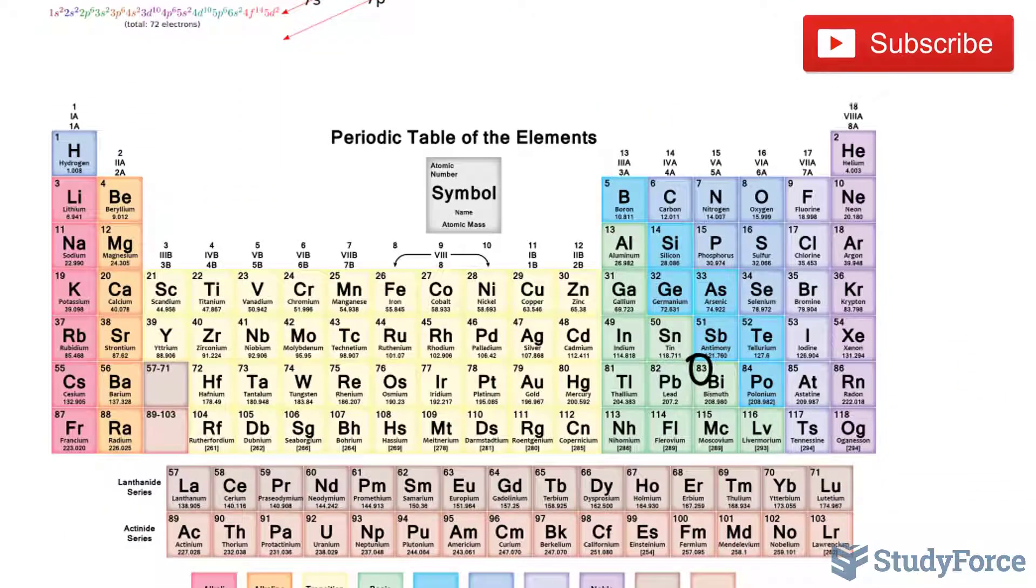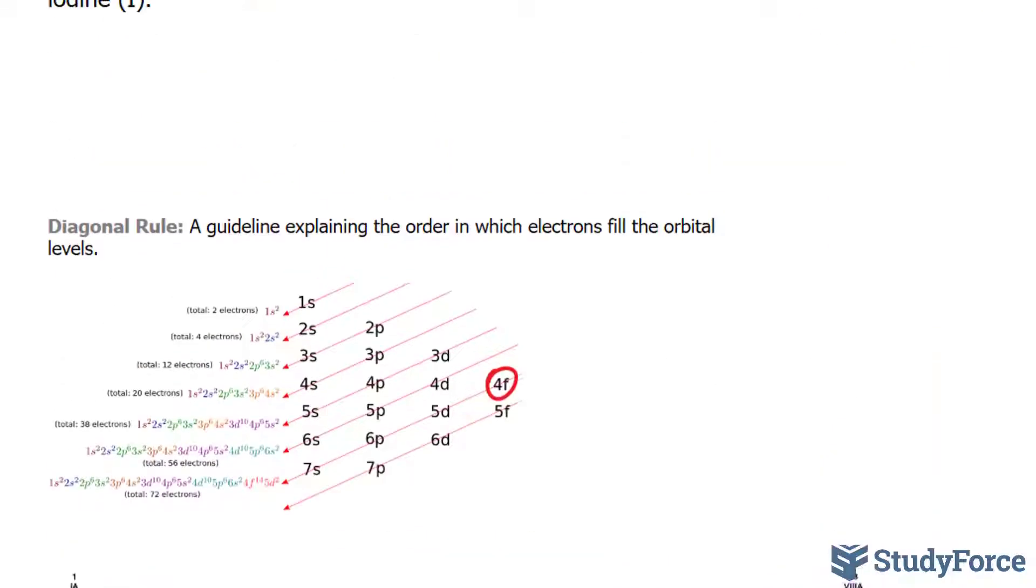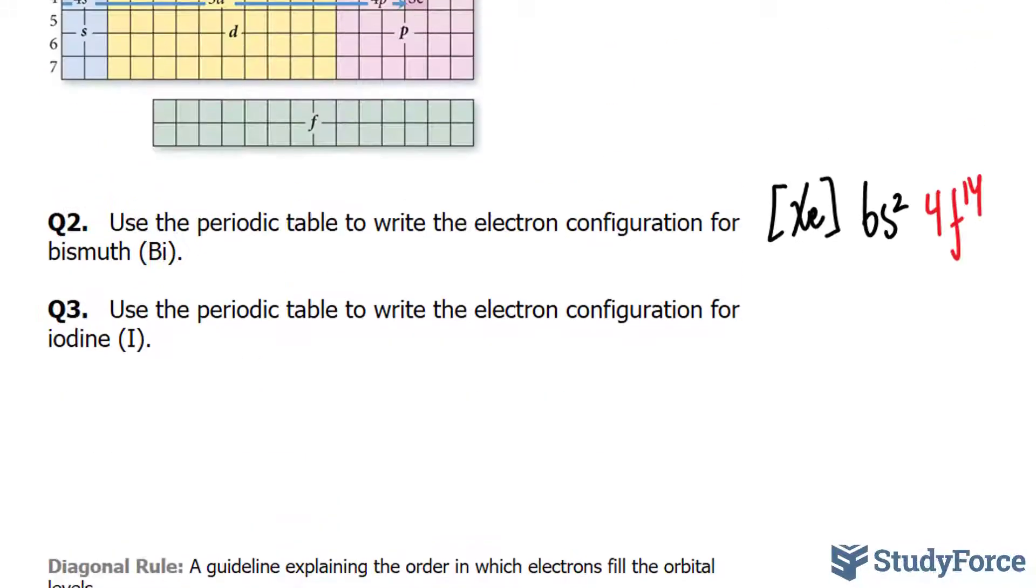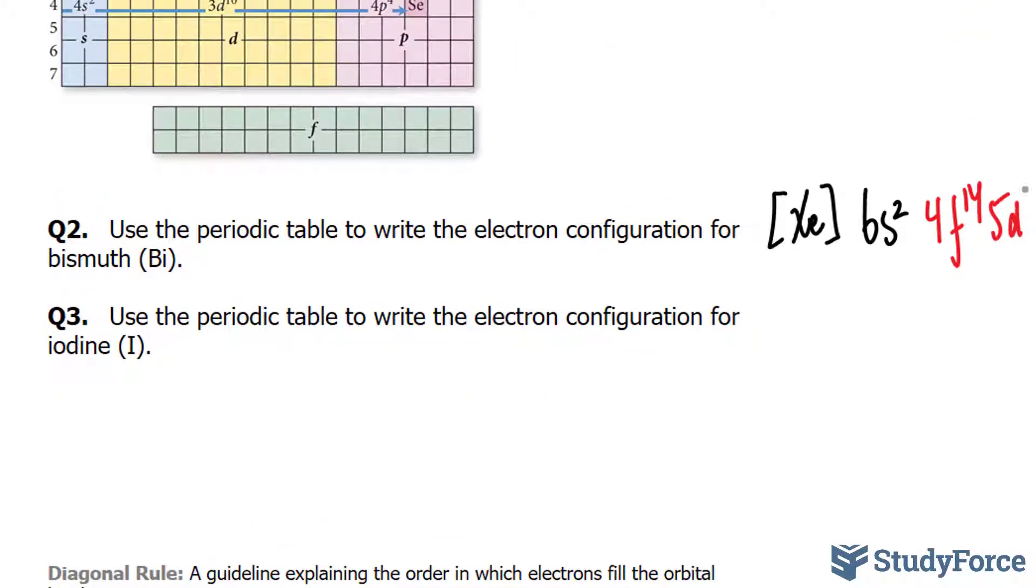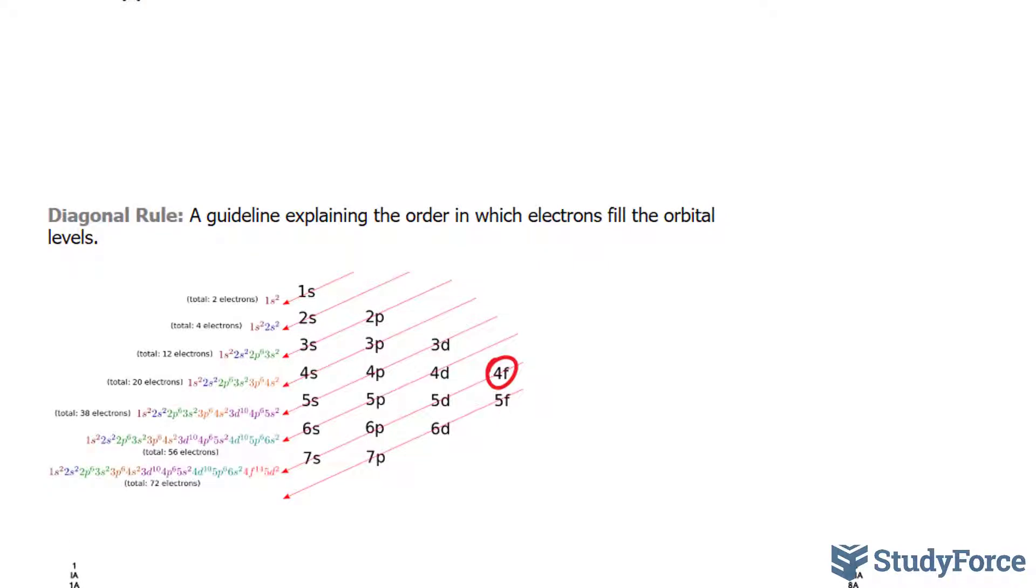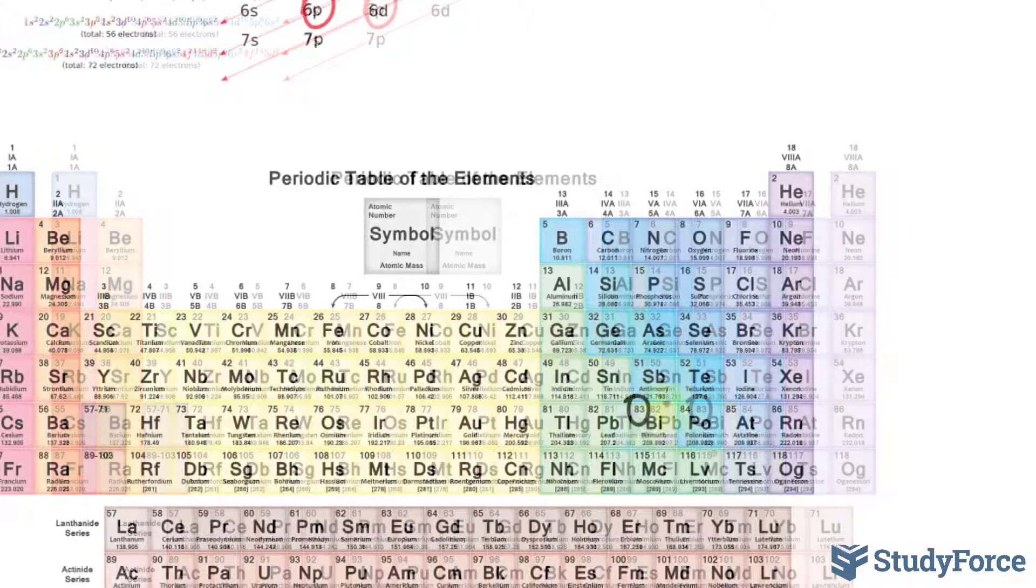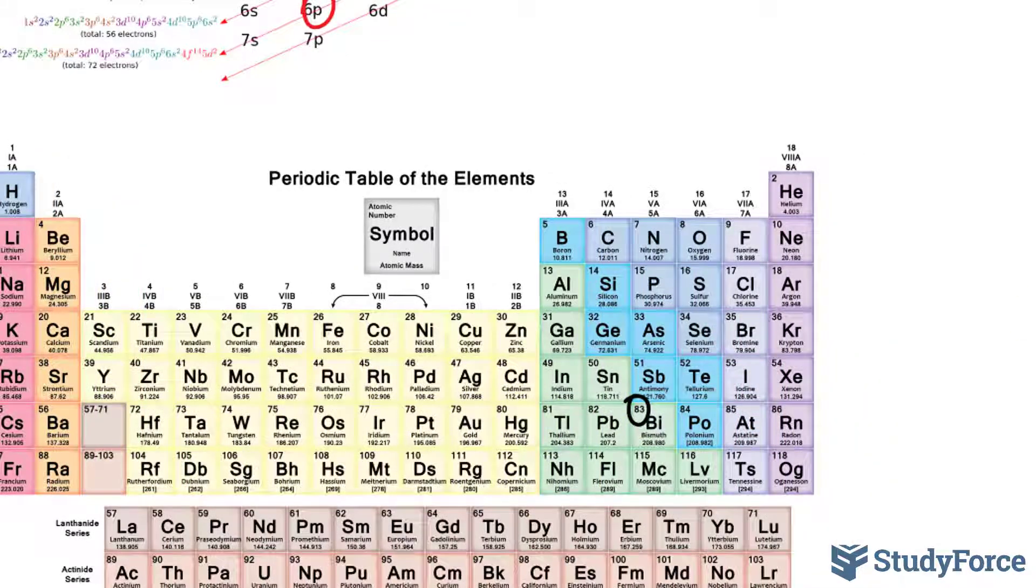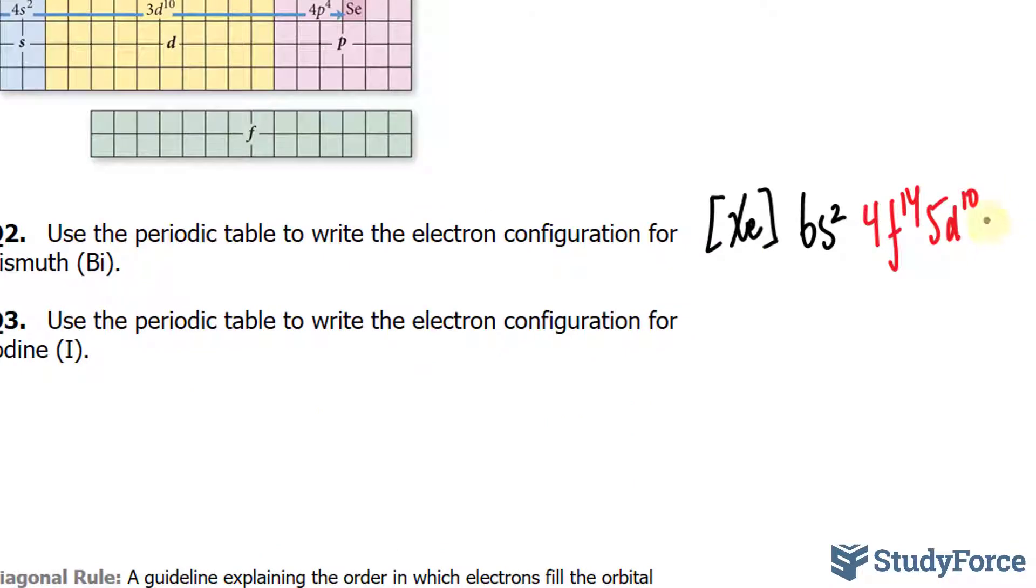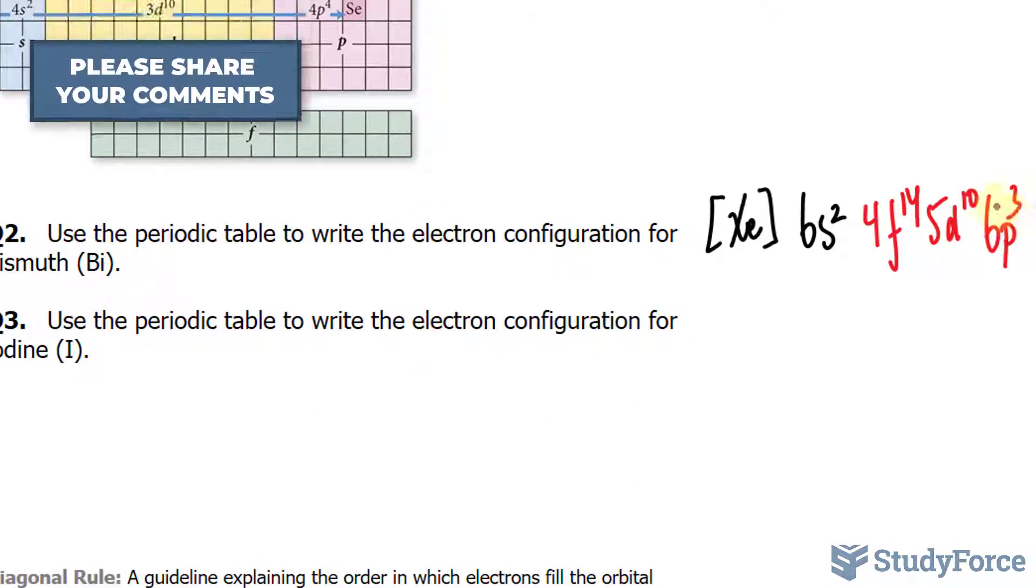After that comes the D block, which holds up to 10 electrons. So we'll write down 5D10. Lastly, we move into the P part over here. Since it's 3 from this block, we'll write down 6P3.